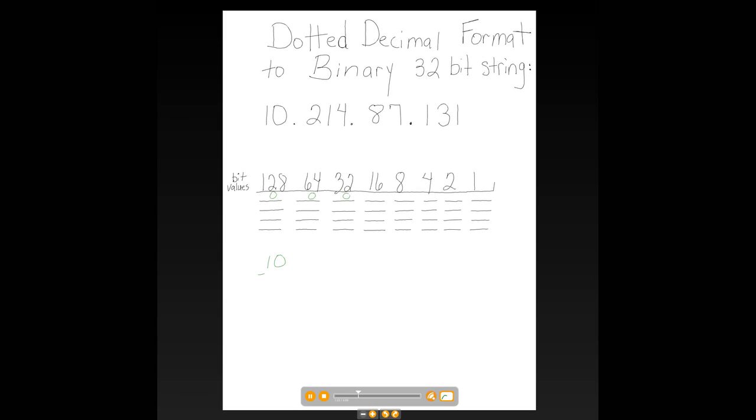32, again, too large, turned off. 16, off. 8, yes, that bit is turned on. That's 2. 4 is turned off. 2 is turned on. And the value of 1 is turned off. So 8 plus 2 is 10, and now we've written it in our binary form.